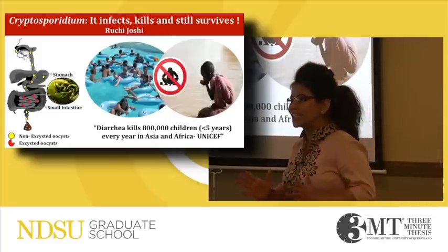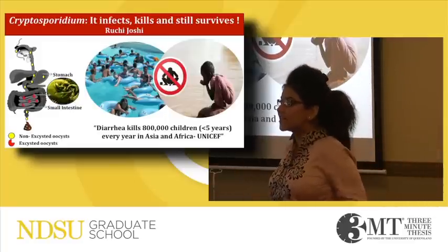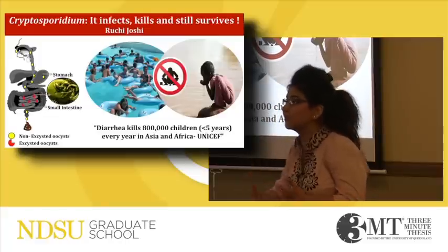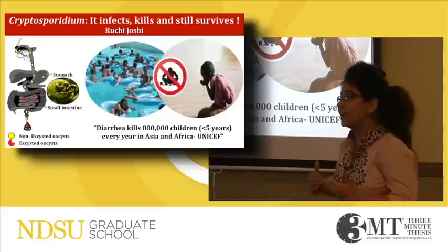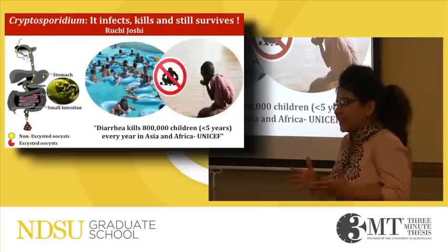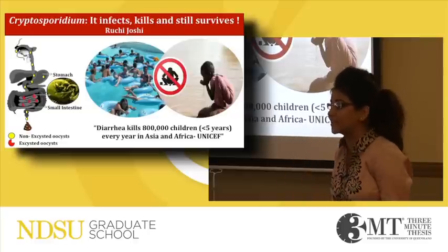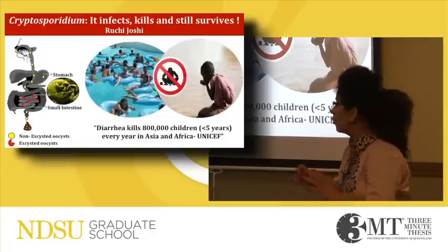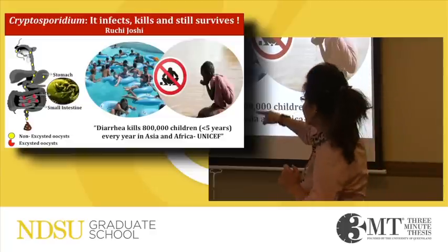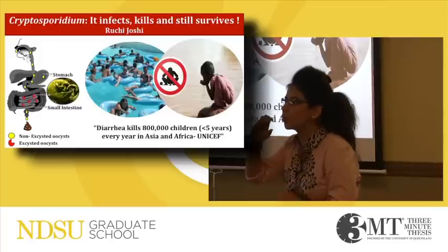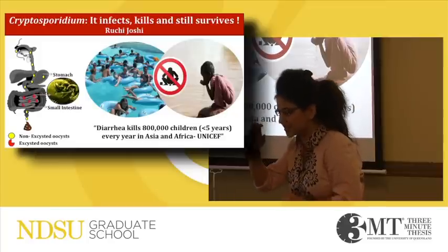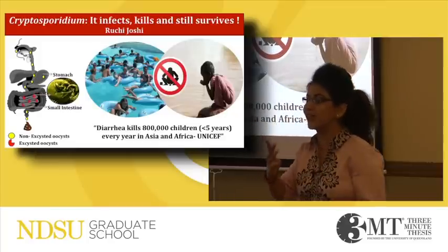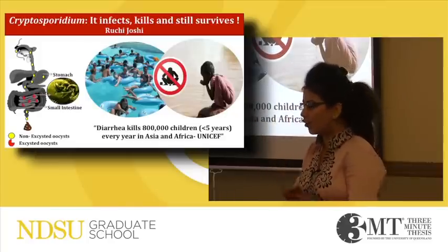This parasite completes its entire life cycle within a single host. That means it multiplies and excretes in the feces, where it releases these spherical oocysts — the round ones. Each microscopic oocyst contains four elongated infective sporozoids.